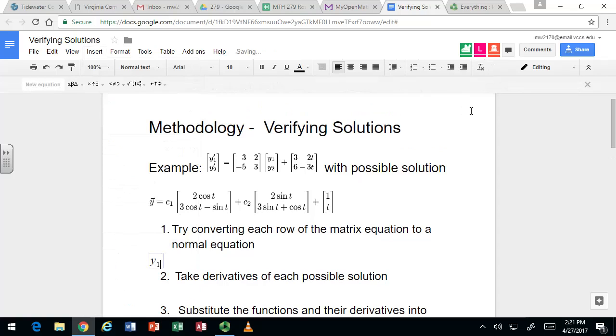So the first row would be y1 equals c1 times 2 cosine t plus c2 times 2 sine t plus 1.